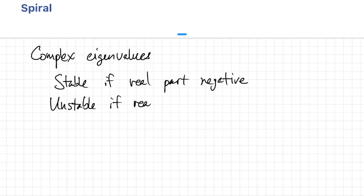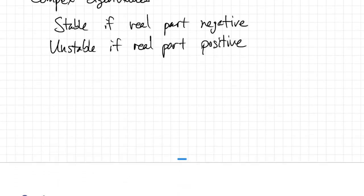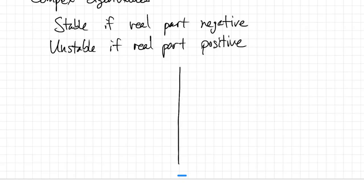If the real part is positive, then it'll be unstable. Spiral lives up to the name. There are no longer any sort of linear solutions because there are no real eigenvectors.